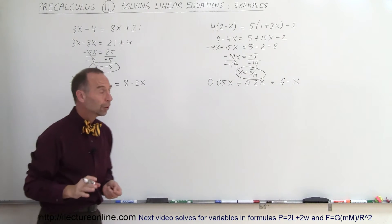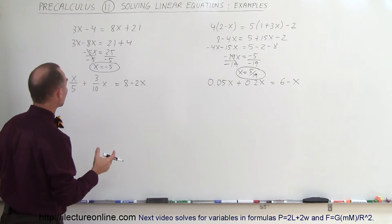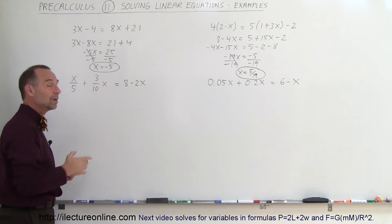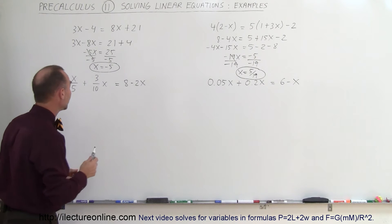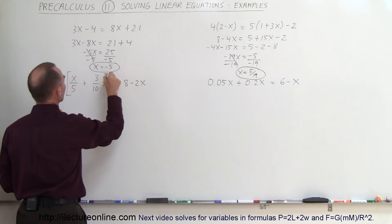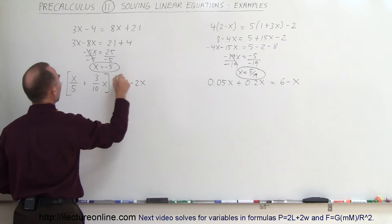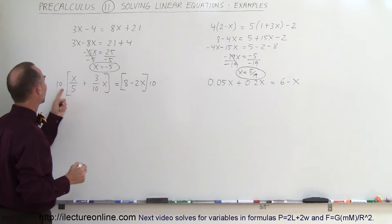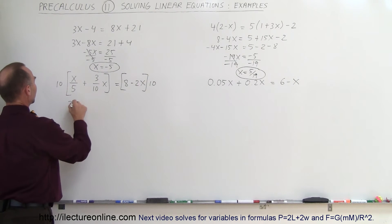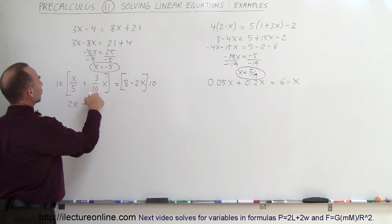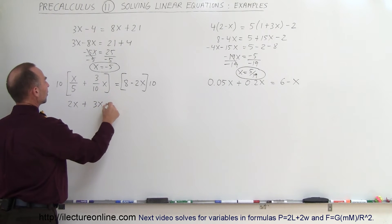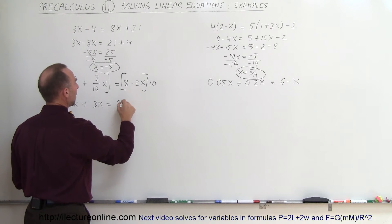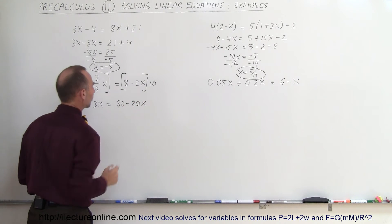Alright, third example. Now we have fractions, and we can see that the lowest common denominator here is 10, which means we're going to multiply both sides of the equation by the lowest common denominator — multiply the left side by 10 and multiply the right side by 10. So 5 goes into 10 twice, so we get 2x; plus 10 goes into 10 just once, that becomes 3x; is equal to 10 times 8 which is 80, minus 20x.